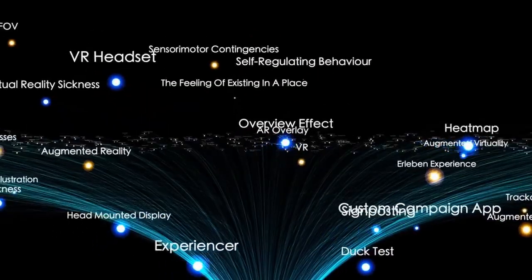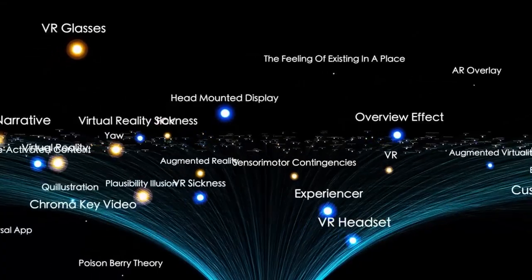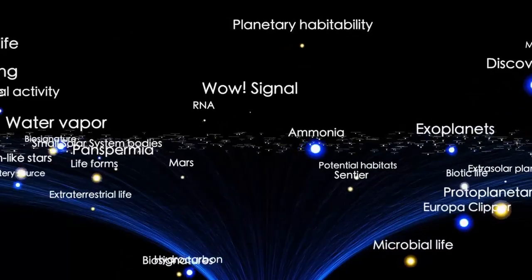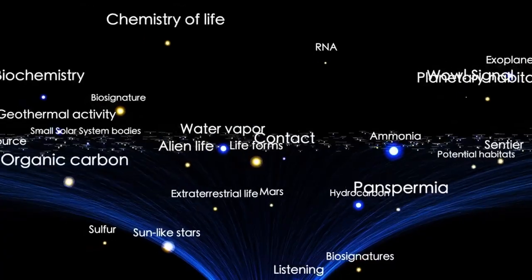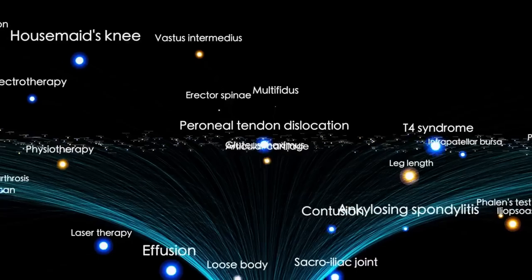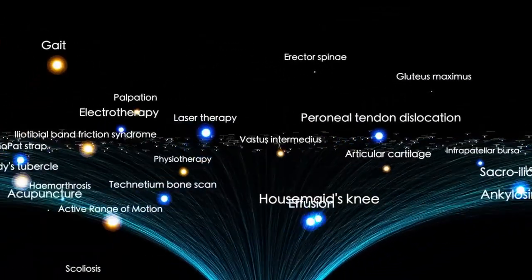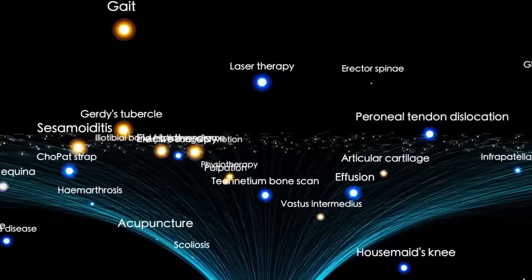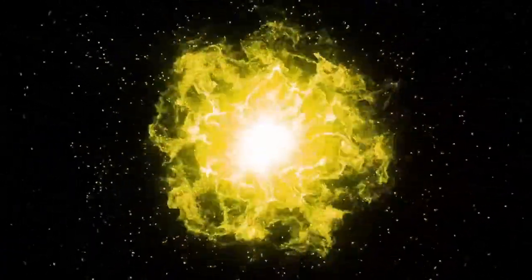The James Webb Space Telescope, our most powerful window into the void, has captured what could be the most disturbing discovery in modern history. What began as a routine observation of the third interstellar object ever recorded within our solar system, an object designated 3.I Atlas, has spiraled into a mystery that reaches far beyond science. Stay with us, and if you haven't already, subscribe now because what follows is not a story you want to miss.